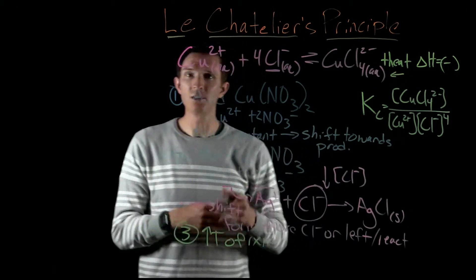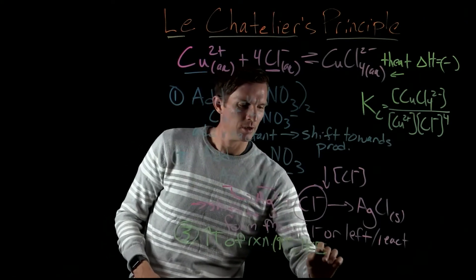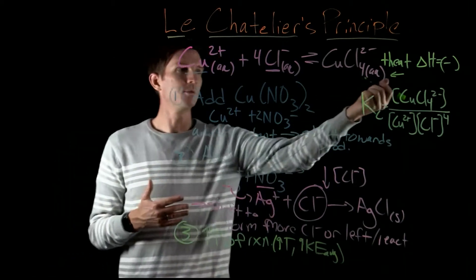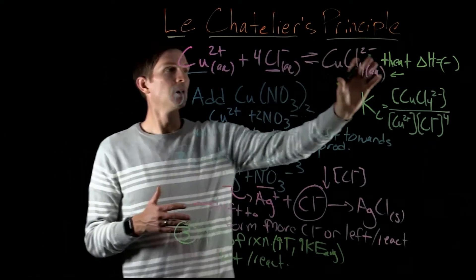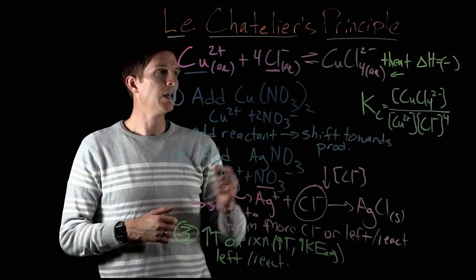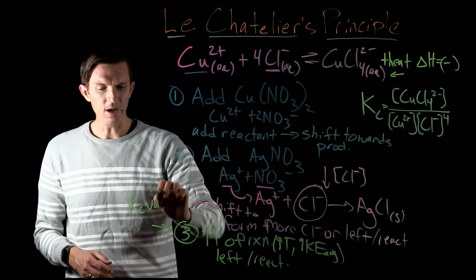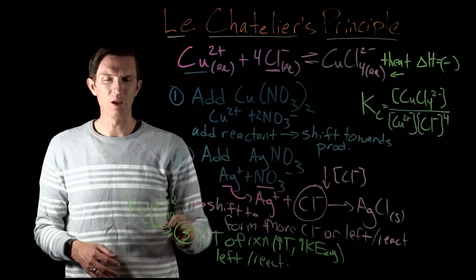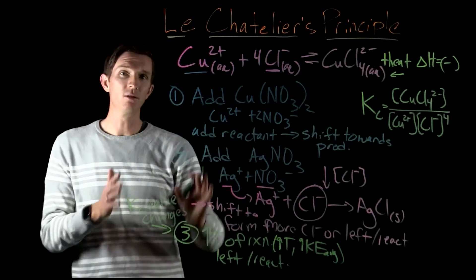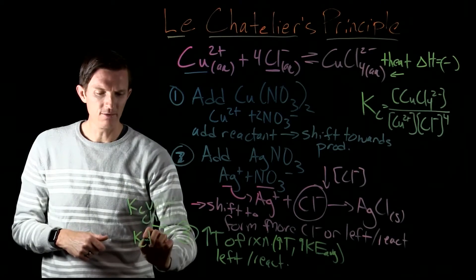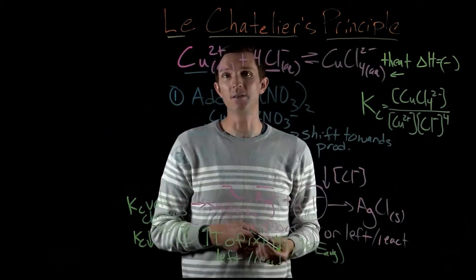Our equilibrium is going to shift away from the added heat — shift left, towards the reactants — because of the exothermic nature of the reaction. Importantly, the Kc value itself changes with temperature. Since the reaction shifts to create more reactants and decrease products for an exothermic reaction with increased temperature, our Kc value is going to decrease. We'll have more reactants and fewer products, decreasing Kc. This behavior is specific to the type of reaction.